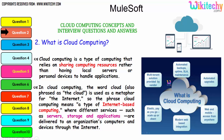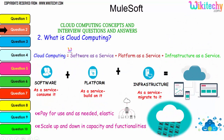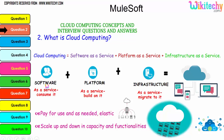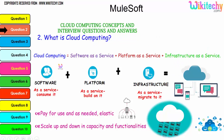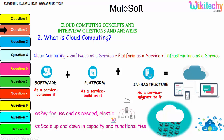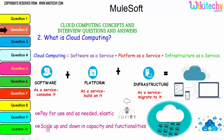These are considered major advantages of cloud computing. Cloud computing consists of Software as a Service, Platform as a Service, and Infrastructure as a Service — and the collaboration of software, platform, and infrastructure is referred to as cloud computing. The major advantage is pay-for-use as needed: if you need minimal storage, pay for that; if you need bigger storage, pay for that. It is elastic — you can scale up and down in capacity and functionality.